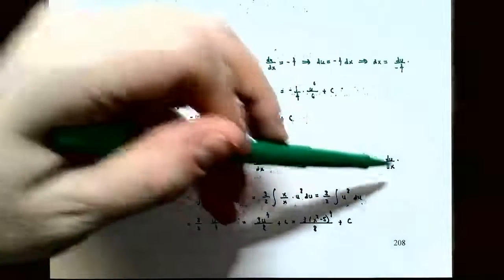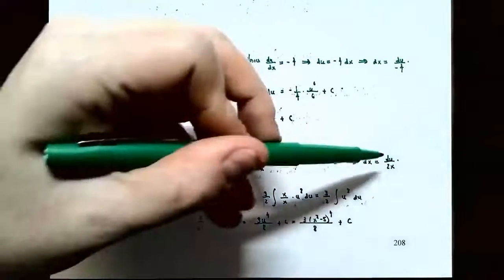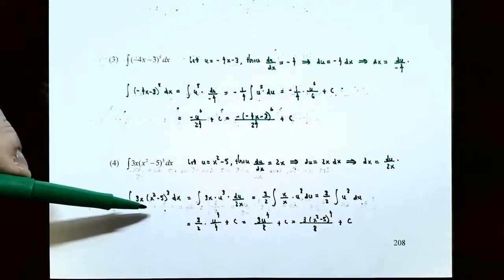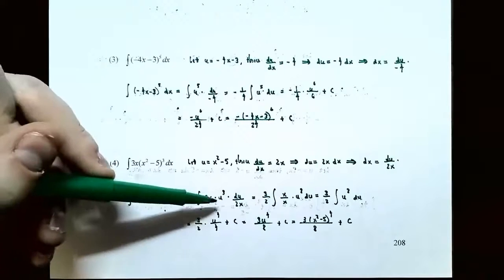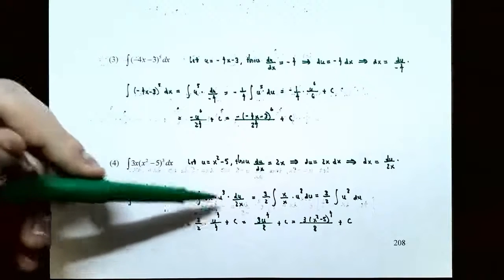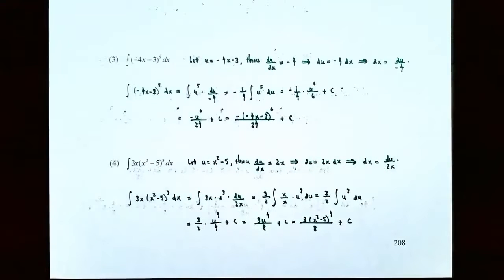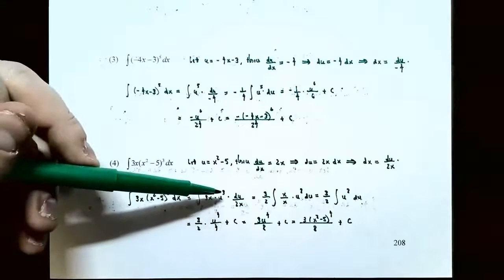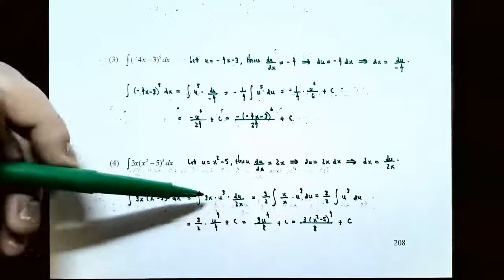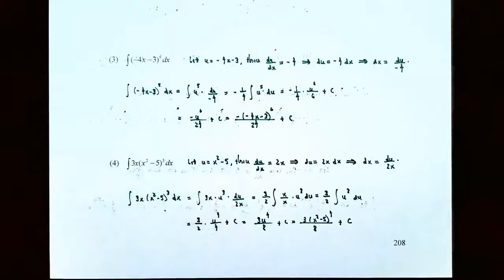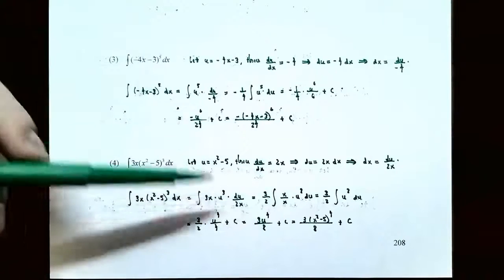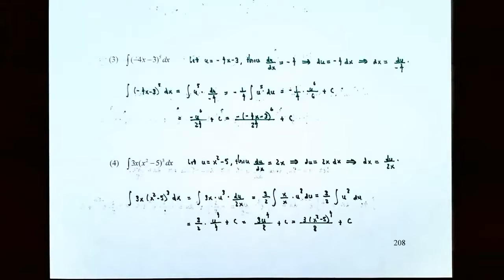Go back to the original integral: 3x times (x² minus 5)^3 dx. Replace x² minus 5 with u to get u^3, and replace dx with du/(2x). Now the x in the numerator and x in the denominator cancel out, leaving 3/2 as the coefficient outside the integral sign. So you have 3/2 times the integral of u^3 du. Using the power rule, the antiderivative is u^4 / 4, giving 3/2 times u^4 / 4, which simplifies to 3u^4 / 8 plus C.